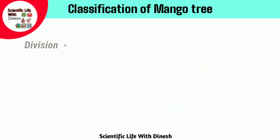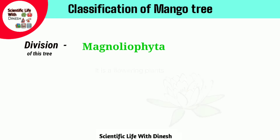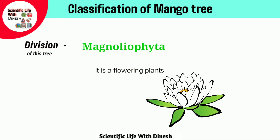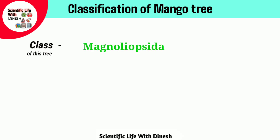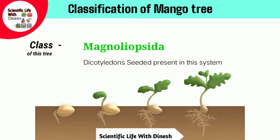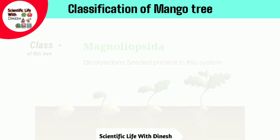Next is division. Division of mango tree is Magnoliophyta, meaning it is a flowering plant. And next is the class of mango tree, it is Magnoliopsida, meaning dicotyledons — seeds present in the system.